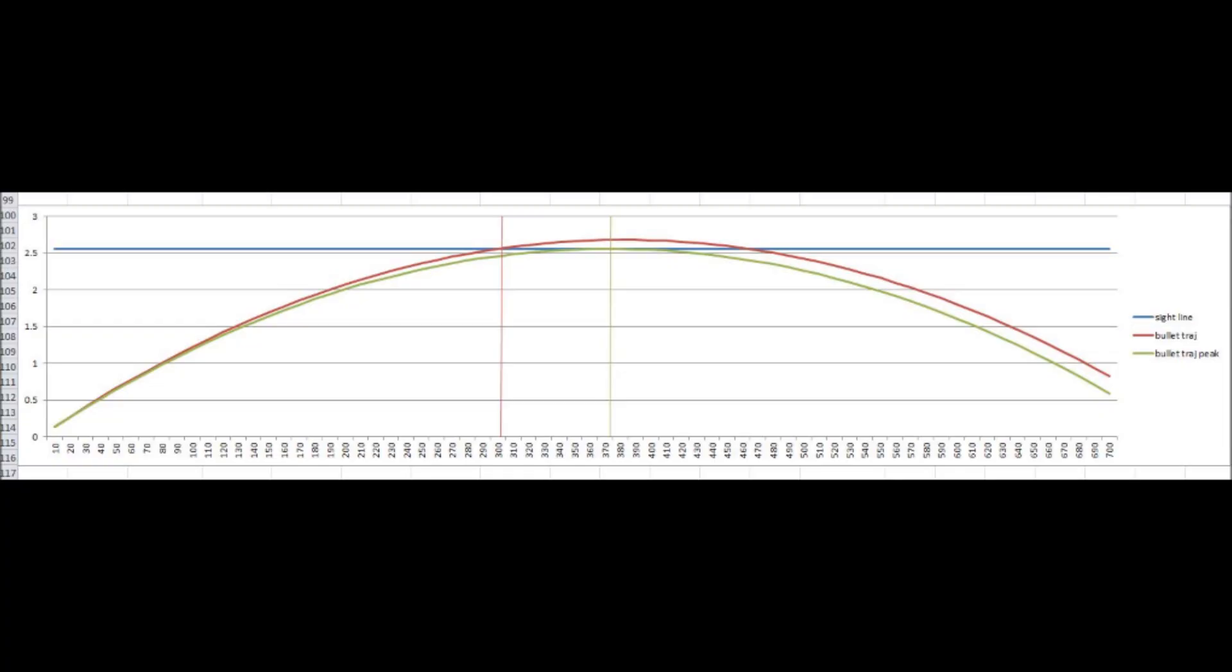Looking at the graph, the red line is the bullet trajectory for an AR-15 sighted at 100 yards. It crosses the sight line at 100 yards, and then continues to rise, and doesn't come back down across sight line until about 460 or 470 feet. The green line is the trajectory of a bullet that peaks at the sight line, and it touches the sight line at about 124.4 yards. The blue line is obviously the sight line.